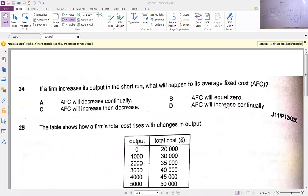Question 24 says if a firm increases output in the short run - and we now have a clear idea about the difference between the short run and the long run - what will happen to its average fixed cost?